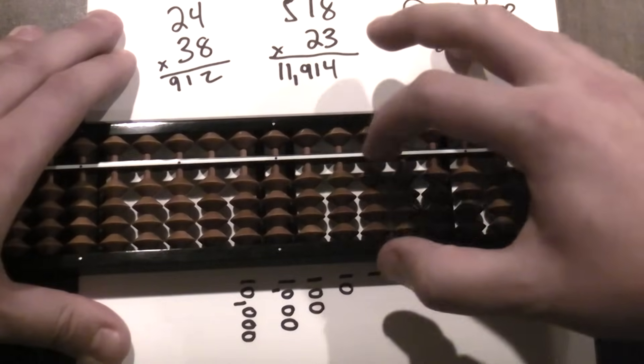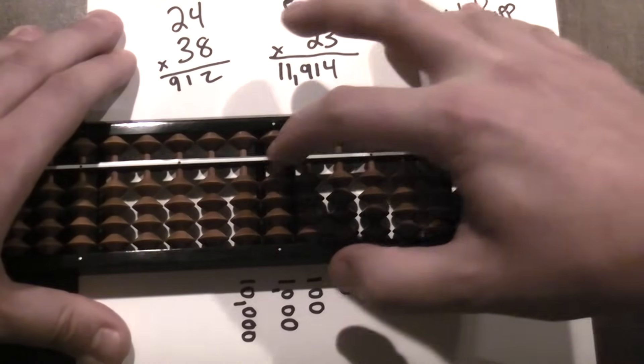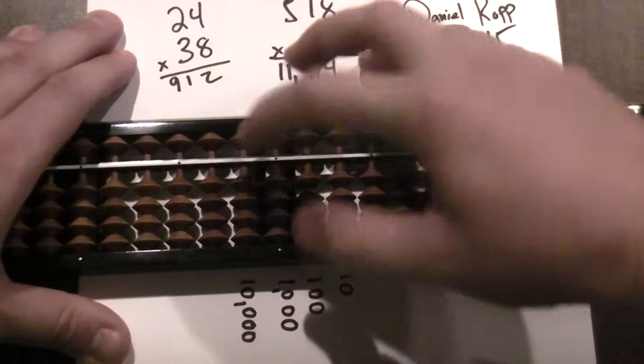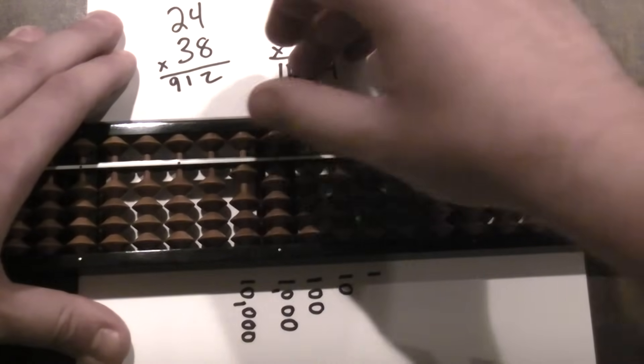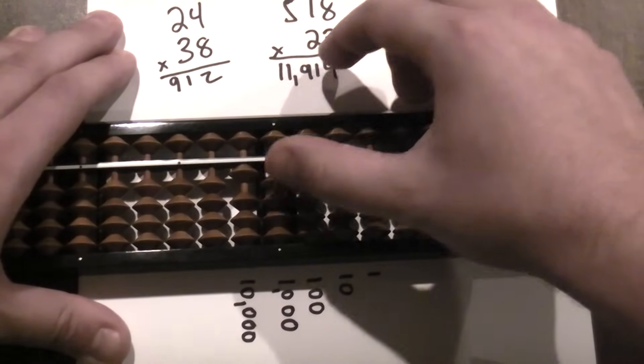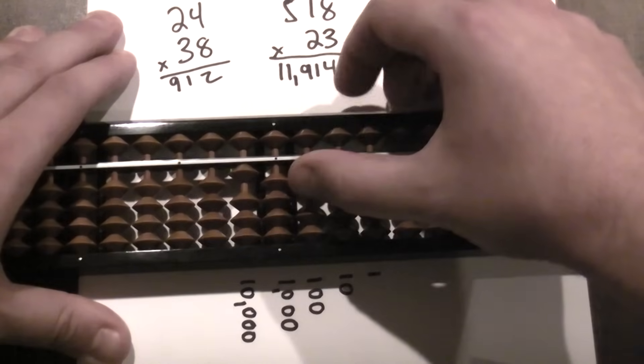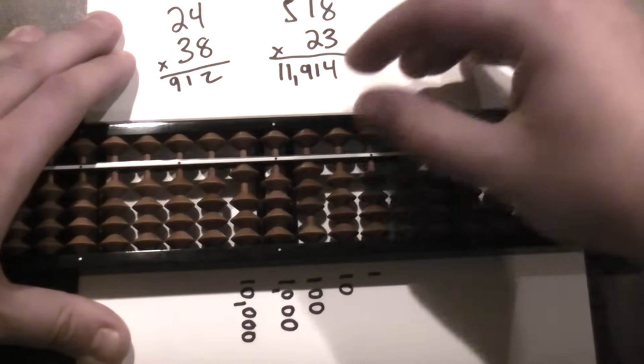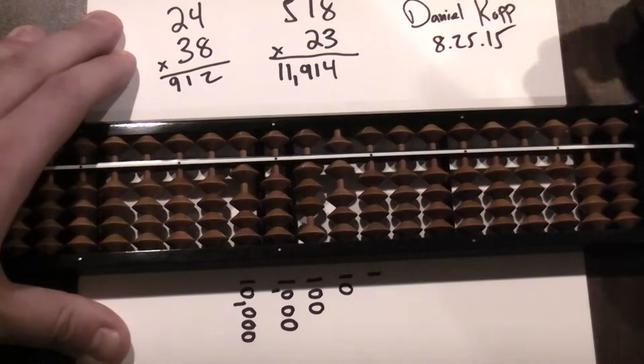So here's my one place. I go one, two, three, four, five. I start here. Two times five is ten. So I go one, zero. Two times one is zero, two. So I go zero, two. Two times eight is sixteen. So I go one, six.